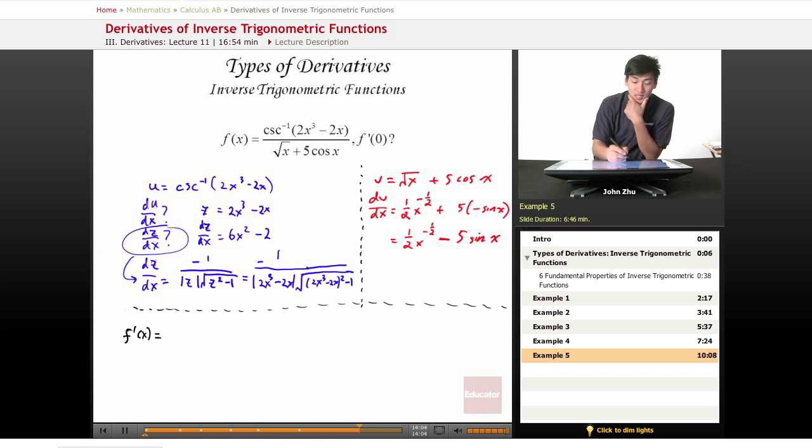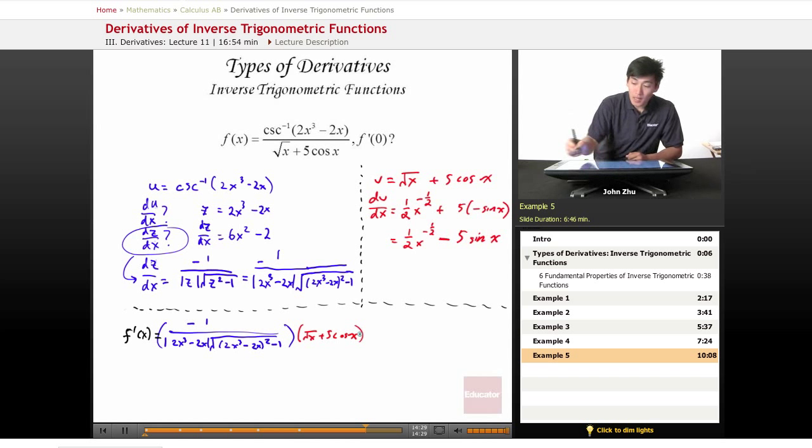which is this giant thing. So negative 1 over absolute value of 2x cubed minus 2x times the square root of 2x cubed minus 2x squared minus 1 times the bottom term, which is just square root of x plus 5 cosine of x